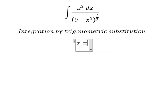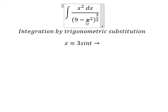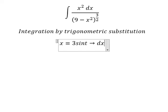We need to put x equal to 3·sin(t). Because if we substitute this, we have 9·sin²(t). Then 9 minus 9·sin²(t) — we can do factorization — gives us 9·cos²(t). We simplify to the power of three over two. And dx becomes 3·cos(t) dt.